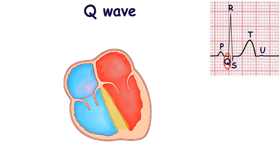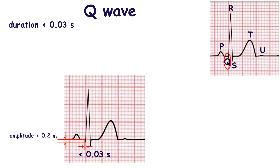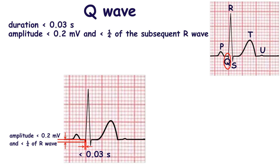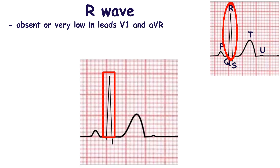The normal Q wave represents depolarization of the ventricular septum. Its duration is less than 0.03 seconds and its amplitude is less than 2 millimeters and less than one fourth of the subsequent R wave. A deep Q wave in AVR is a normal finding. The septal Q wave is found in leads 1, AVL, and V5 to V6. The R wave should be absent or very low in leads V1 and AVR.